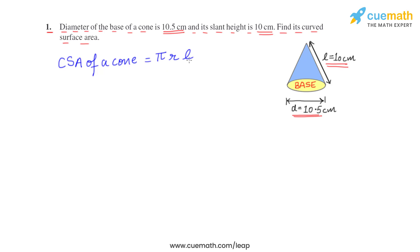So if the diameter is 10.5 centimeters, what will be its radius? Radius will be half of it, so 10.5 by 2. So radius comes out to be 5.25 centimeters. Let's substitute the values of radius and slant height in this formula.